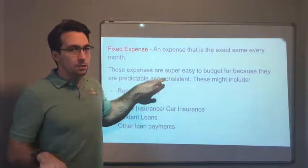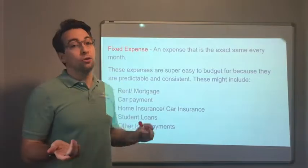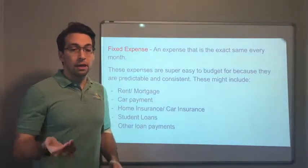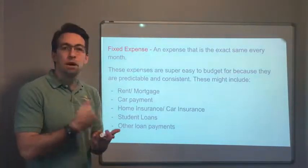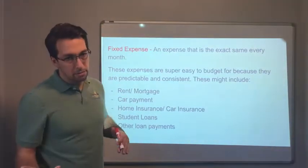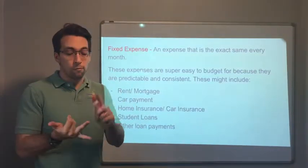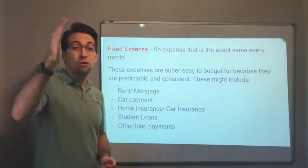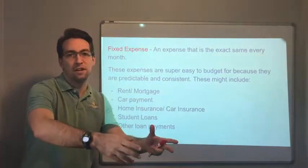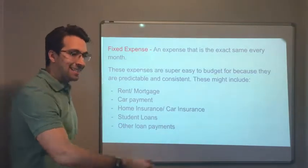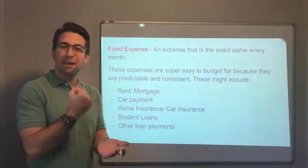Fixed expenses are super easy to budget for because they're consistent and predictable. These might include your rent — some people pay $750 a month — or your mortgage, like $2,000 a month. Car payments are another example: when you buy a car on a three-, four-, five-, or even six-year loan, you pay a consistent amount every month, like $200 or $450.